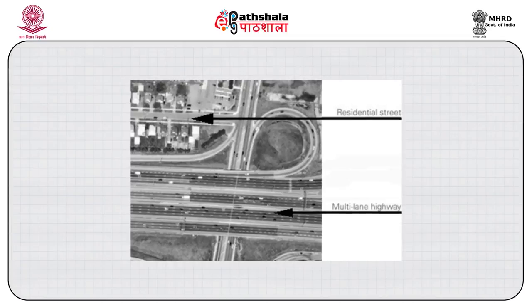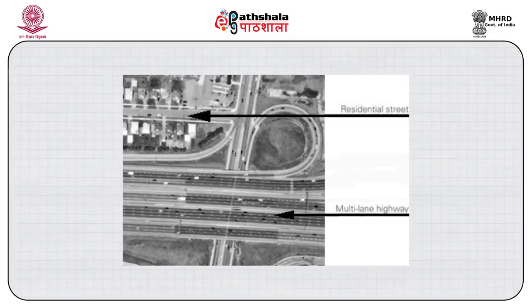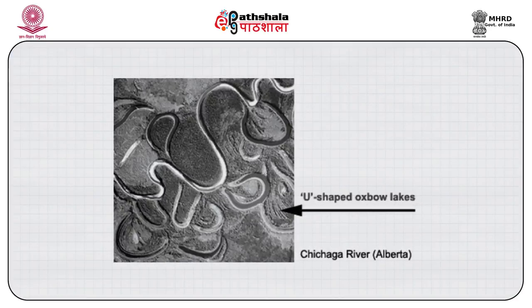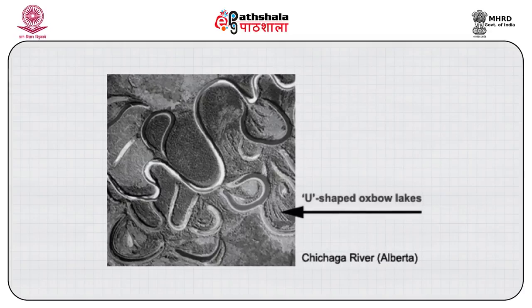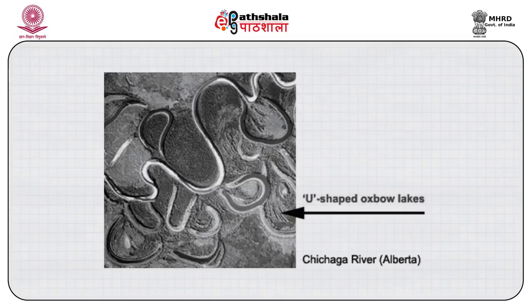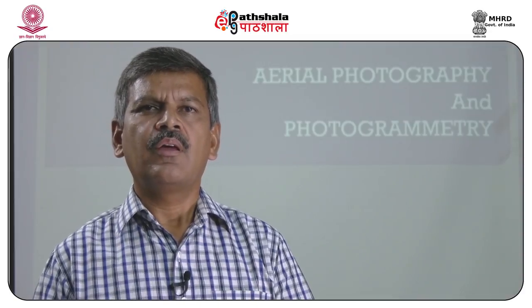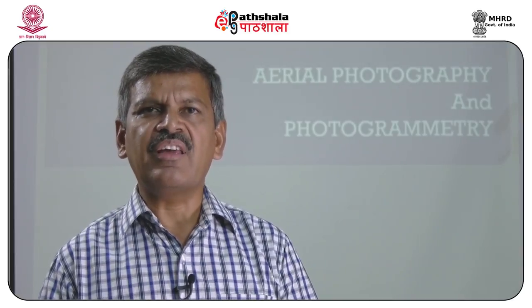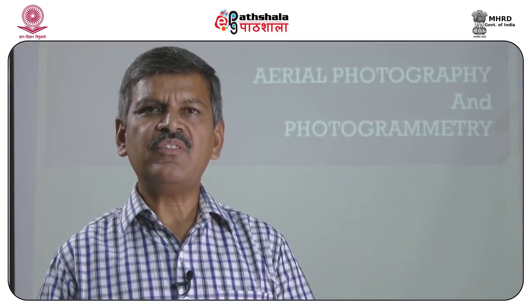For example, small-sized buildings may indicate a residential area, whereas large-sized buildings may indicate an industrial area. Shape gives a great idea to interpret an aerial photograph. Natural things have an irregular shape, whereas man-made things have shapes in the form of rectangles, angles, circles, and so on. For example, a road may have a very straight structure, whereas a river may have a very irregular structure. So on the basis of shape, we can identify whether this is a road or a river.